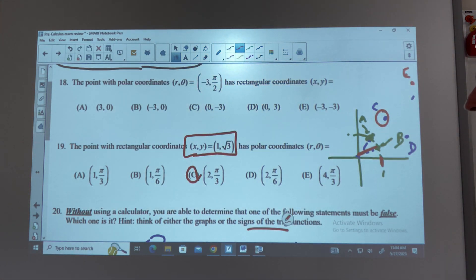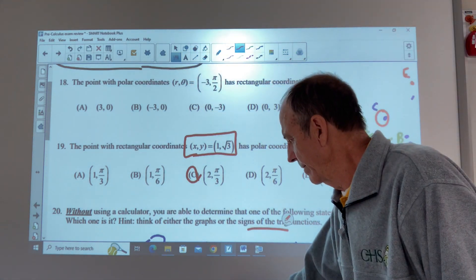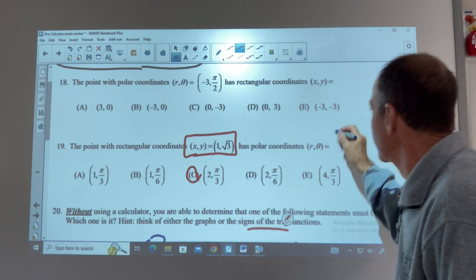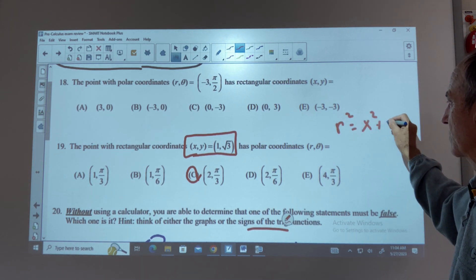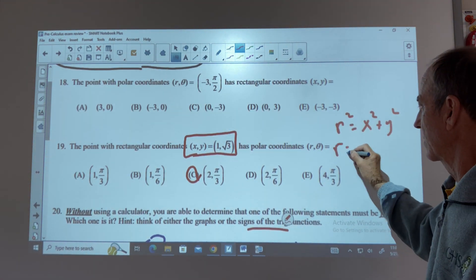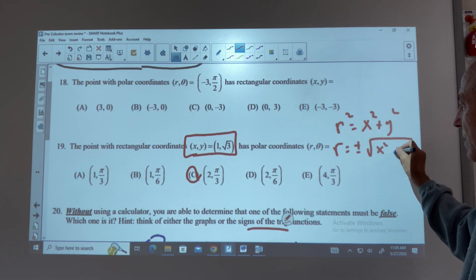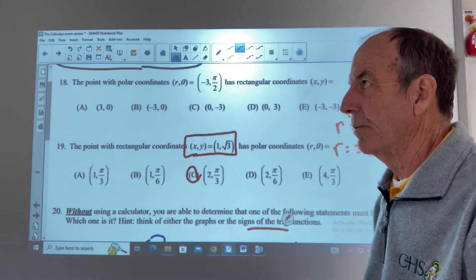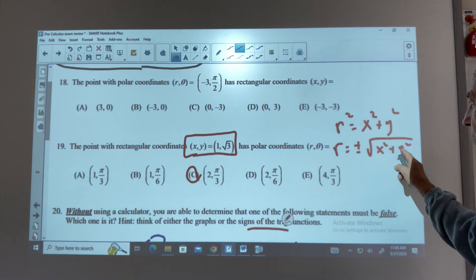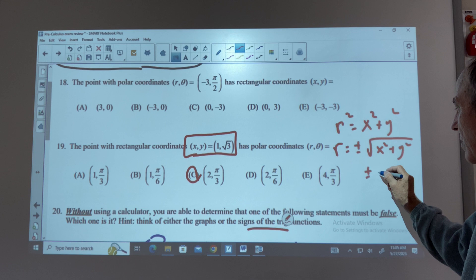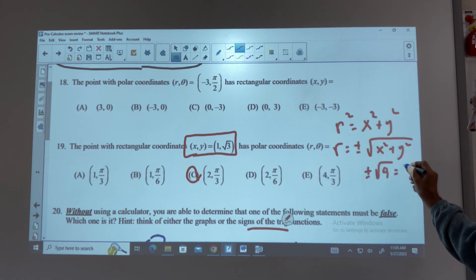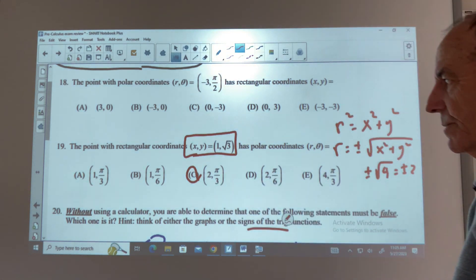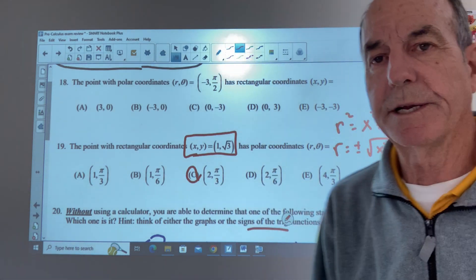If you want the formula for these things, R squared is X squared plus Y squared. R could be plus or minus the square root of X squared plus Y squared. So X is 1, Y is the square root of 3, 1 squared plus square root 3 squared. R is going to be plus or minus the square root of 4, which is plus or minus 2. And that's the one that has R is equal to 2. Okay, 18 and 19, done.